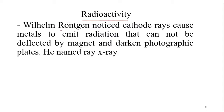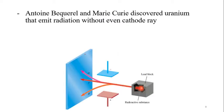Radioactivity led to further discoveries about atoms. Röntgen noticed that cathode rays caused metals to emit radiation that could not be deflected by a magnet and darkened photographic plates — he named them X-rays. Becquerel and the Curies discovered that uranium can radiate without a cathode ray tube.